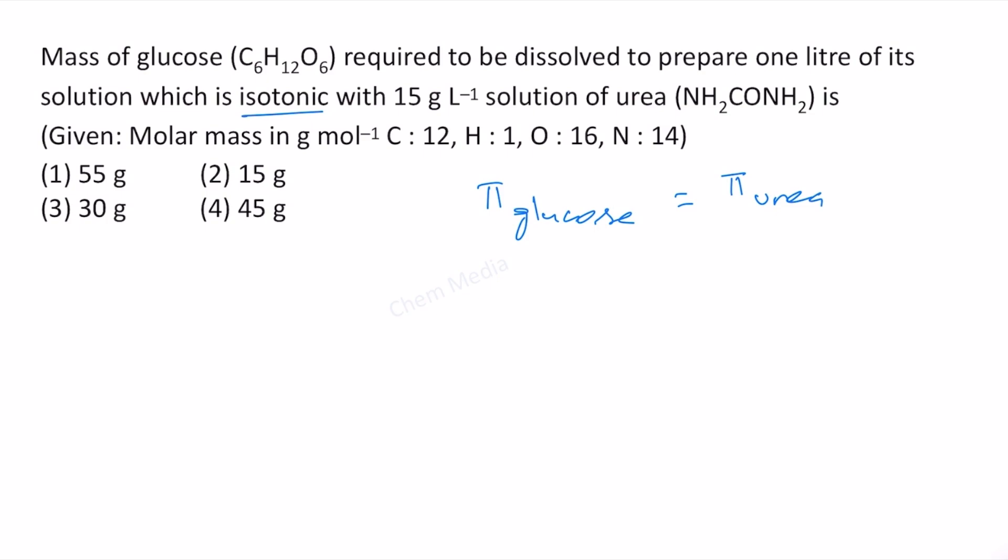The Van't Hoff equation to calculate the osmotic pressure is concentration times RT times the Van't Hoff factor. So let us consider this as C₁, the concentration.